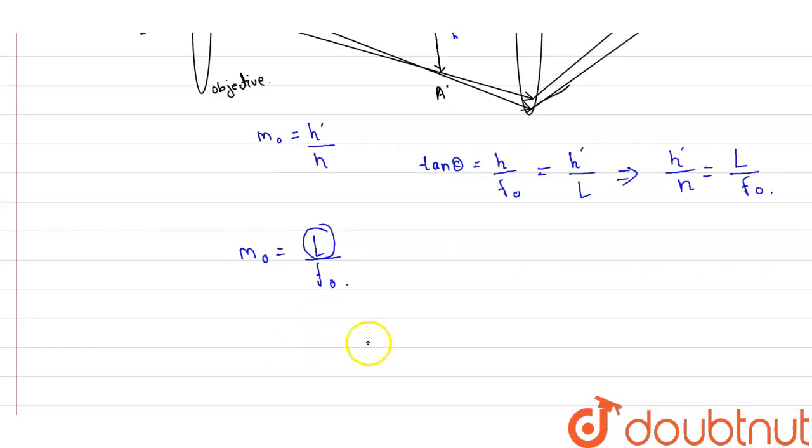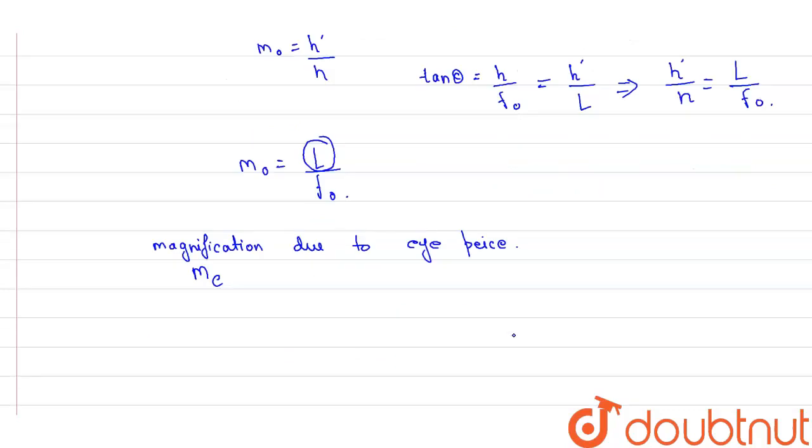Now magnification due to eyepiece is given as ME. Magnification due to eyepiece, that is given as ME, that is equal to D divided by μ0. This is the lens maker formula.